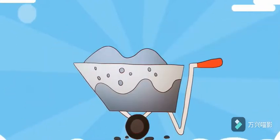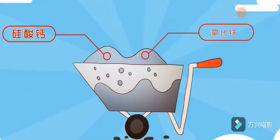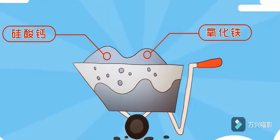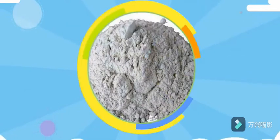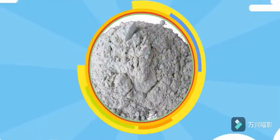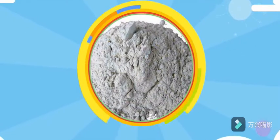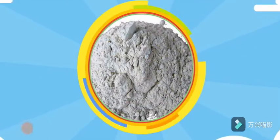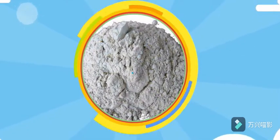White cement refers to the raw material of appropriate composition, which is burnt and partly melted to obtain cement clinker with calcium silicate as the main component and low iron oxide content.